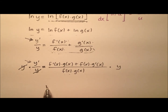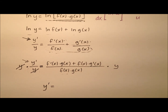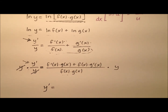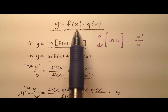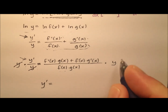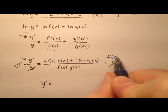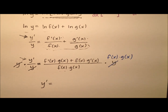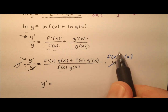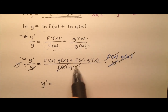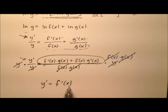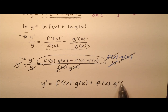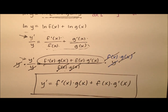These y's will cancel, and y prime will be left all by itself on the left side. But what was y? Remember that y was actually f of x times g of x. So I'll replace this y with f of x times g of x, and you'll see some really nice cancellation — the f of x cancels, the g of x cancels, and I'm left with just the numerator: f prime of x times g of x plus f of x times g prime of x.